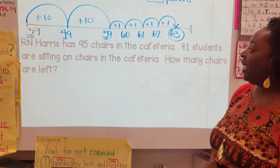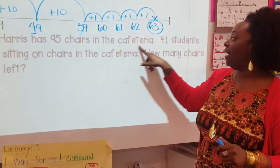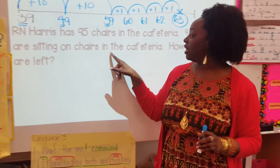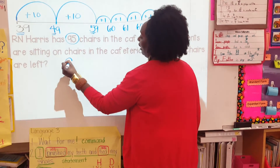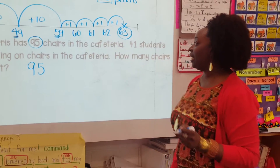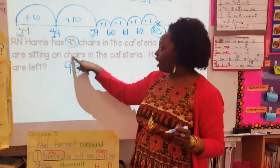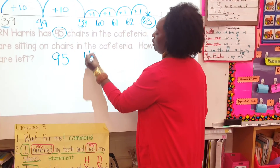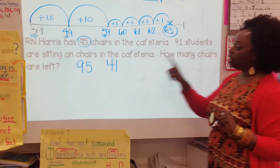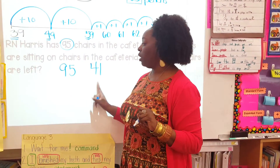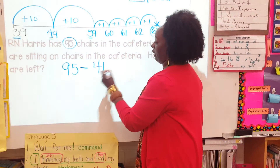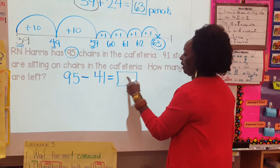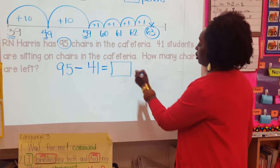Let's try the next one. R.N. Harris has 95 chairs in the cafeteria. 41 students are sitting on chairs in the cafeteria. How many chairs are left? We started with 95 chairs; 41 are being used. We have to figure out how many are left. We're going to subtract here. This is a result unknown story problem — we have to find the result to find the difference of how many chairs are left in the cafeteria.